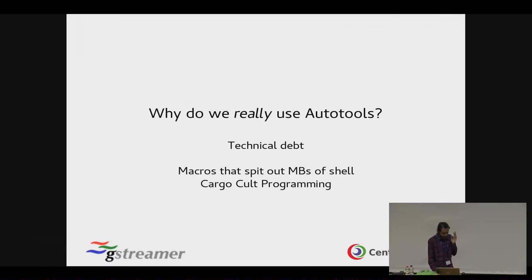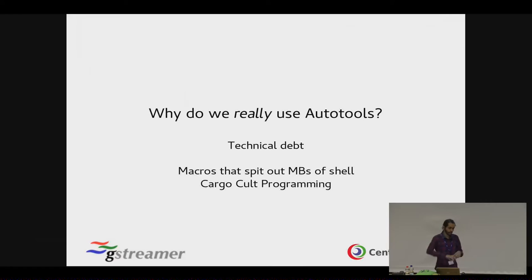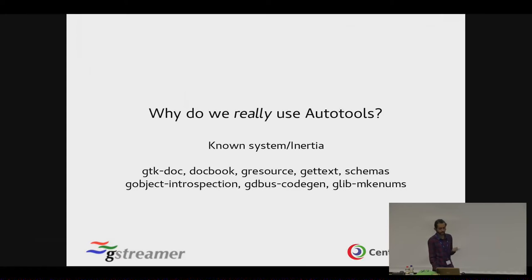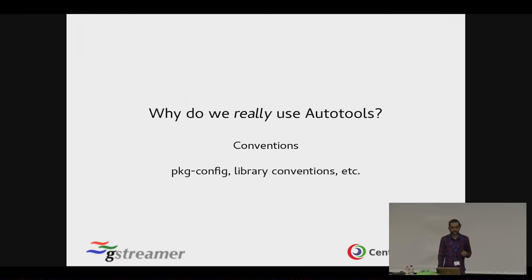The problem is that we use it because we don't actually need to think about it. We just do cargo programming. We take a macro, look at a configure file, copy-paste, and hope it works. That macro calls another macro, which calls more macros and more shell tools and creates megabytes of shell. The other reason is we have an entire ecosystem around it: gdk-doc, docbook, gresource, gettext, schemas, object introspection — everything. And the most important reason is pktconfig and library conventions, which set stable ABIs and APIs.